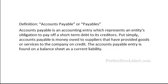Accounts payable is an accounting entry which represents an entity's or a company's obligation to pay off a short-term debt to its creditors. Put simply, accounts payable is money owed to suppliers that have provided goods or services to the company on credit. This accounts payable entry is found on the balance sheet as a current liability. You will also find it on the cash flow statement.